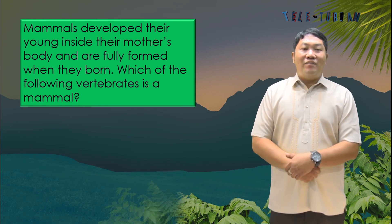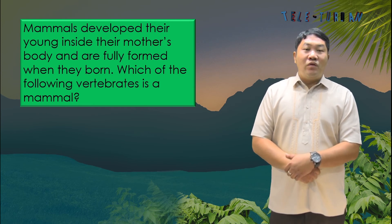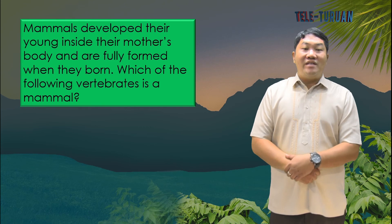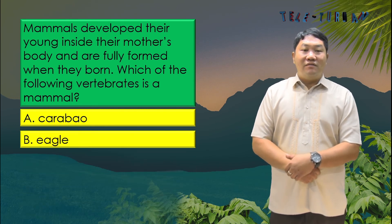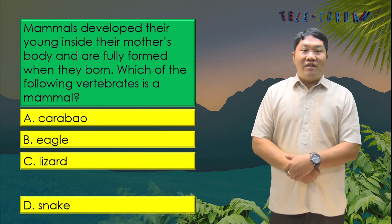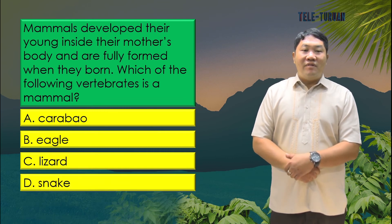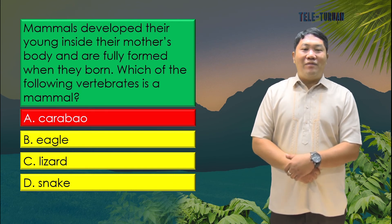Mammals develop their young inside their mother's body and are fully formed when born. Which of the following vertebrates is a mammal? Is it letter A, carabao? Letter B, eagle? Letter C, lizard? Or letter D, snake? The answer is letter A, carabao.